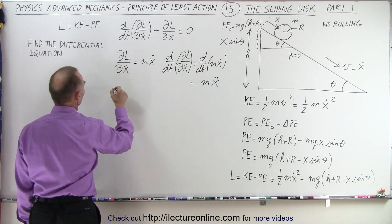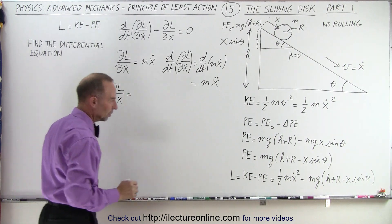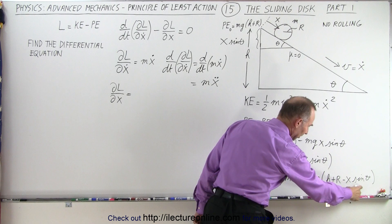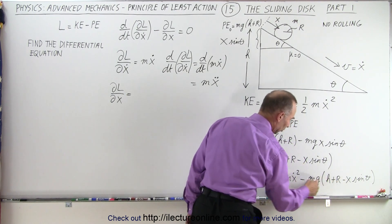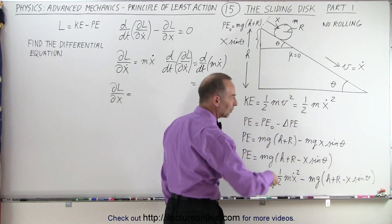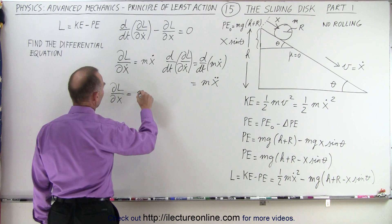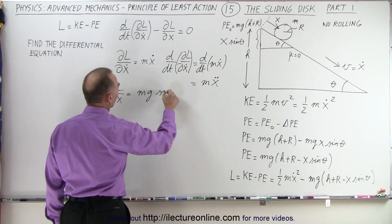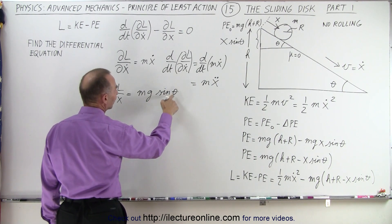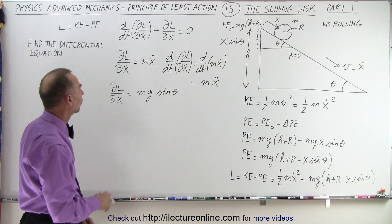Next, I find the partial of L with respect to x. The first term has no x in it, so only the second term contributes. A minus times a minus gives a plus, so we get the derivative of mg times x times sine of theta with respect to x, which equals mg times sine of theta. Note that m, g, and sine of theta are all constants since theta is the fixed incline angle.